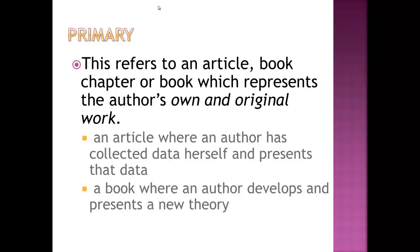The next element is primary. This refers to an article, book chapter, or book which represents the author's own and original work. If I write an article based on my own research and get it published, that would be primary. However, if I read somebody else's research and wrote an article about that, it would be secondary. Examples include an article where an author has collected data herself and presents that data, or a book where the author develops and presents a new theory.